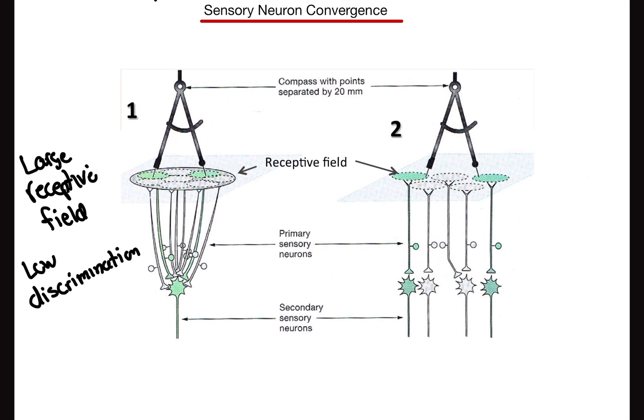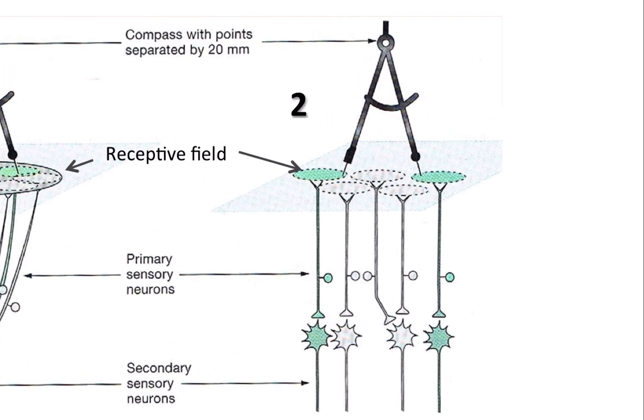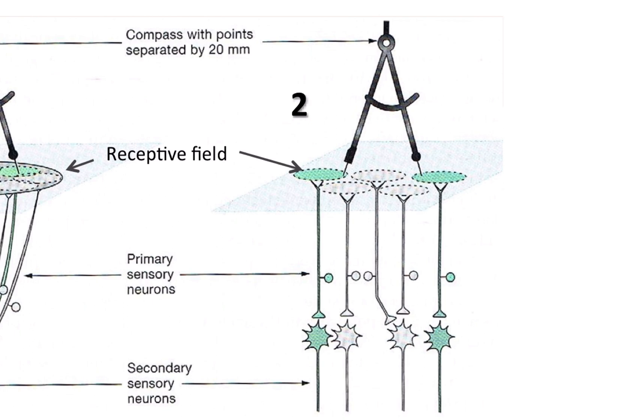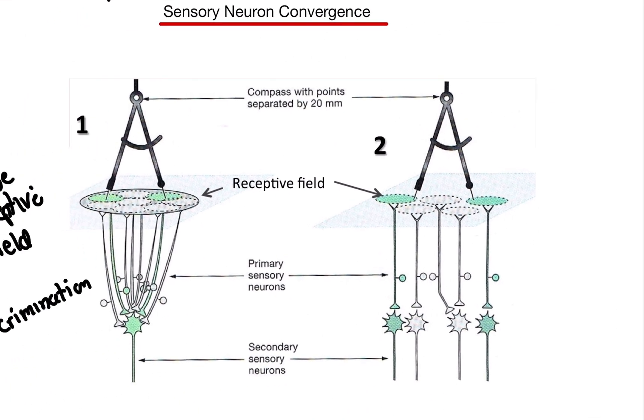Unlike figure two here. Figure two, we have same thing. Two needles touching two different points. However, this receptor talks to its own neuron and this receptor talks to its own neuron. So two neurons. So we say this is a small receptive field. High discrimination.